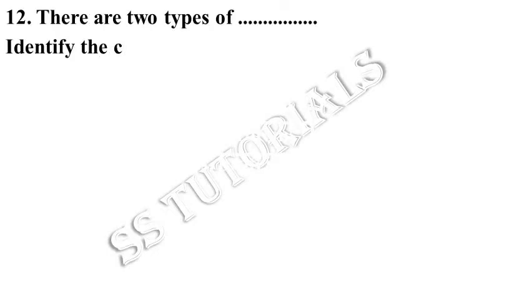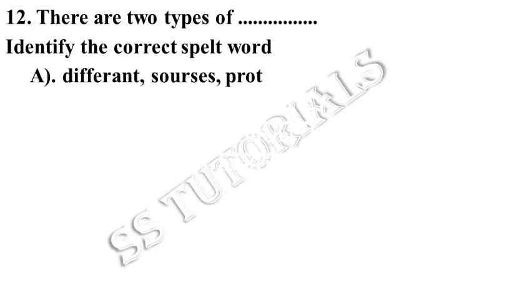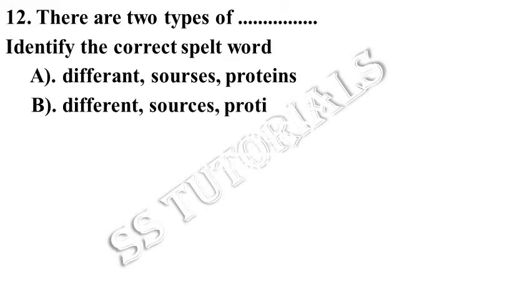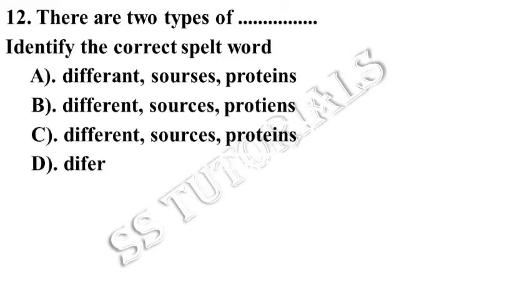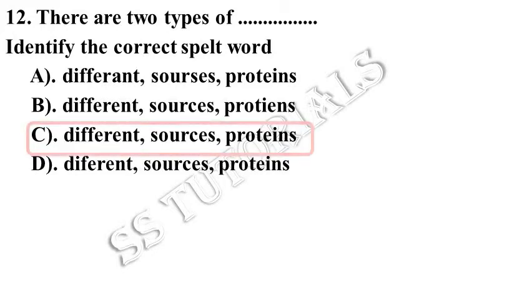There are two types of dash. Identify the correct spelt word. Answer: Option C — Different Sources Proteins.